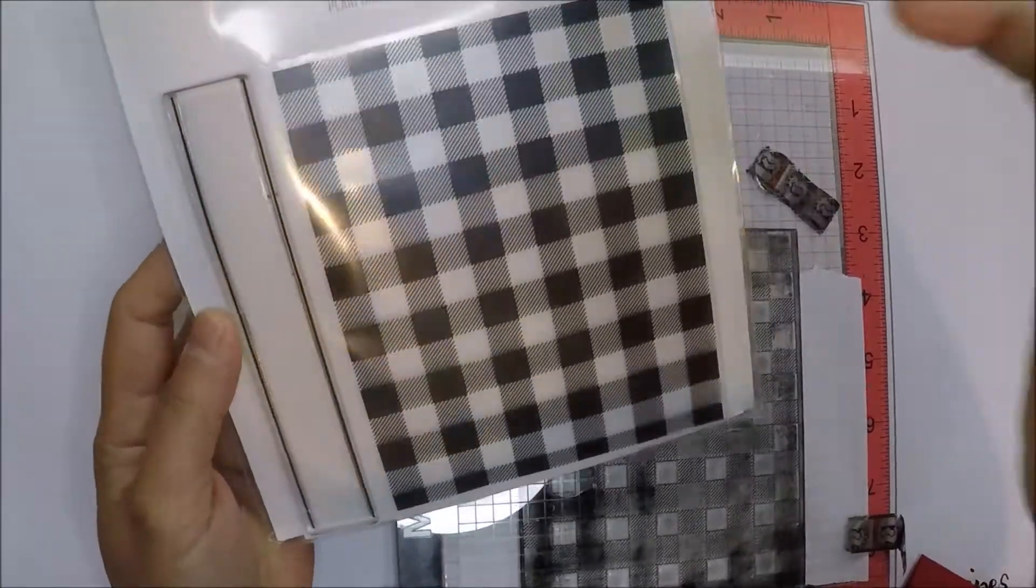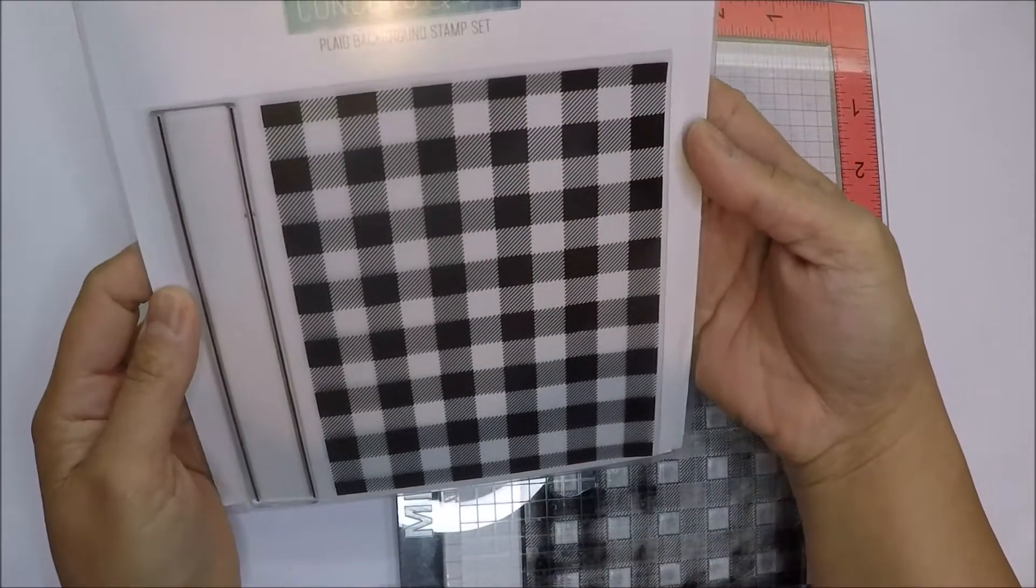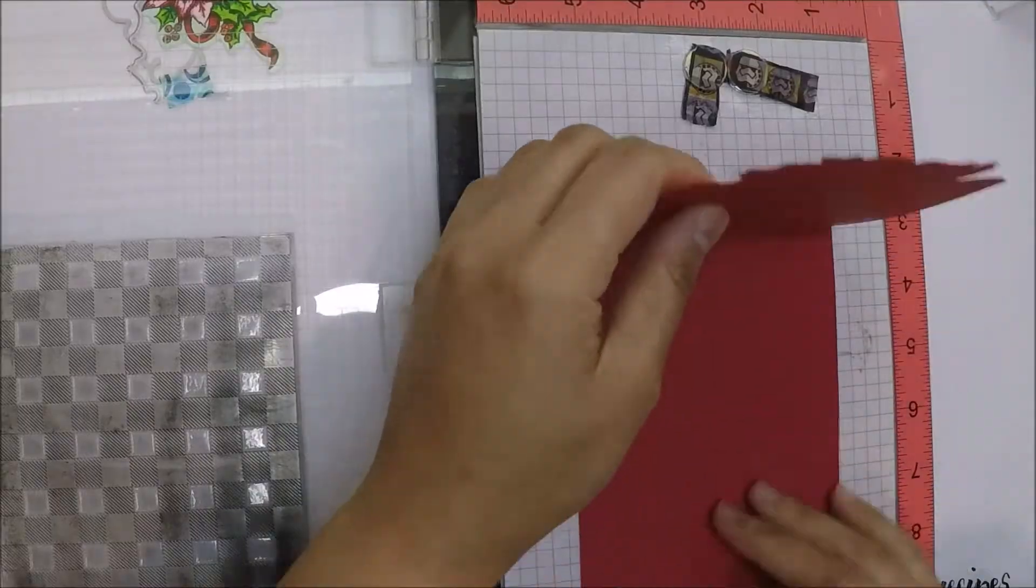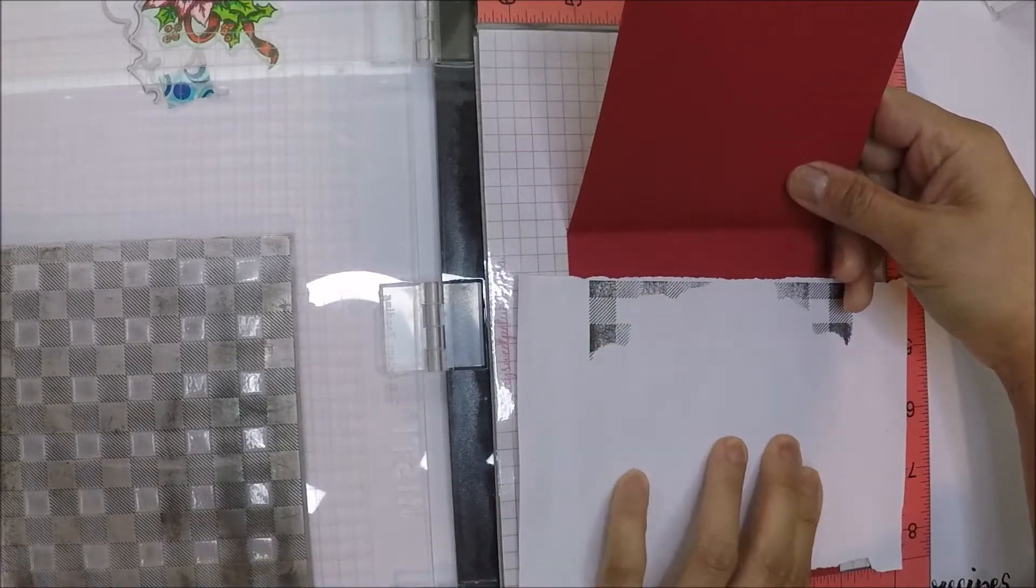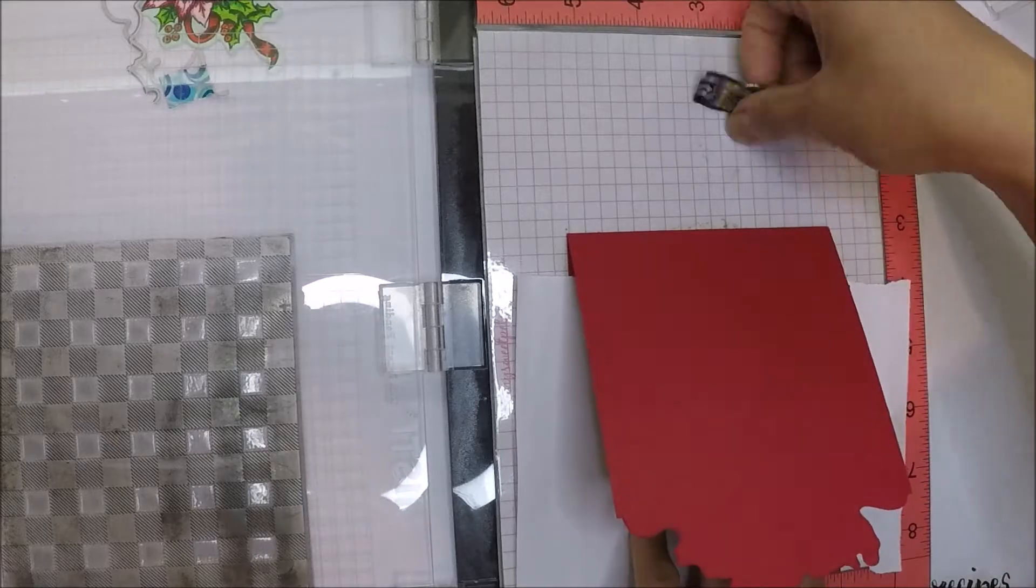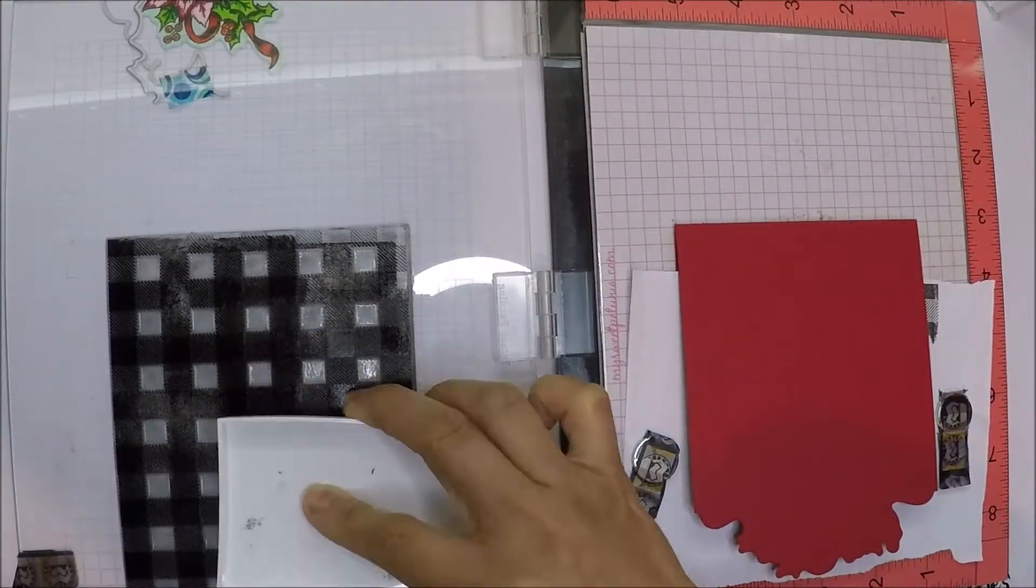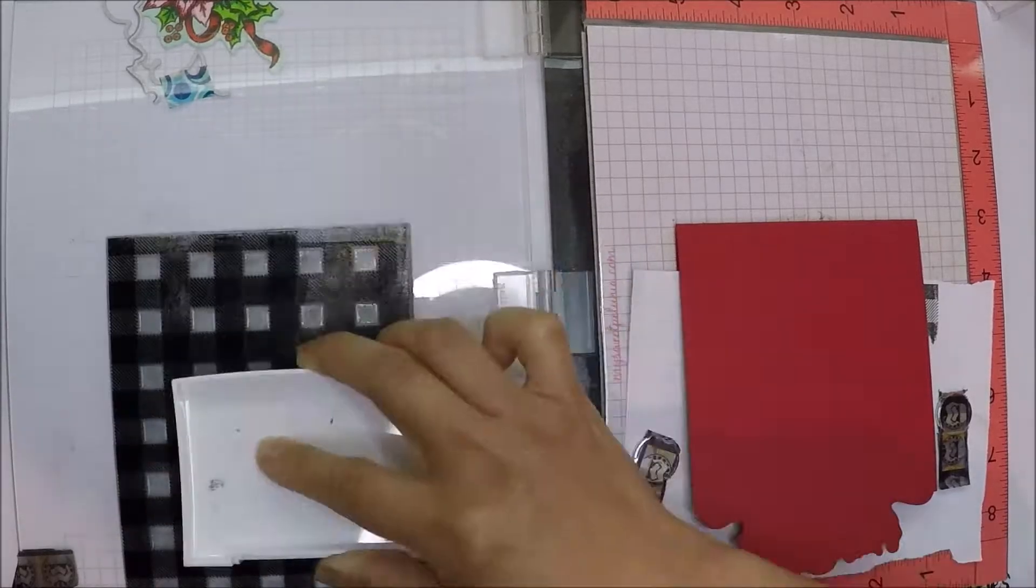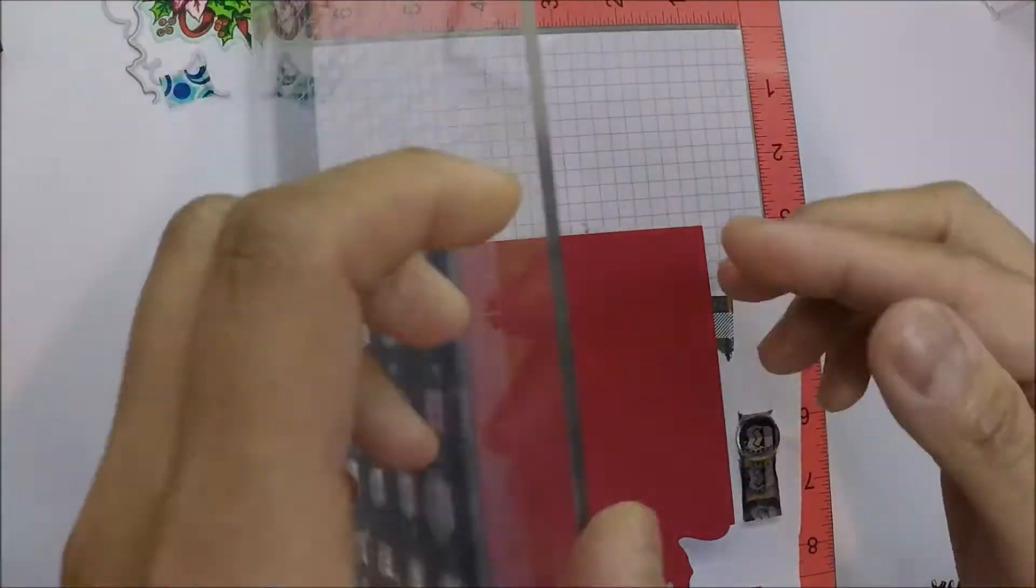For the background, I used Concordant 9 plaid background stamp set. I mounted my stamp on the lid of my MISTI, I'm using my big MISTI here, and then positioned my die-cut red card base and covered the inside with scratch paper. I will ink up my plaid stamp with VersaFine Onyx Black Ink and then stamp that on the paper.